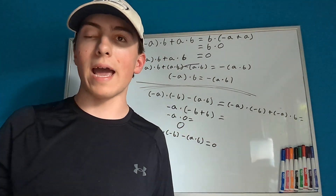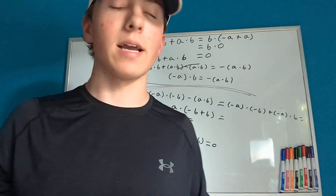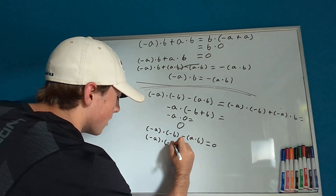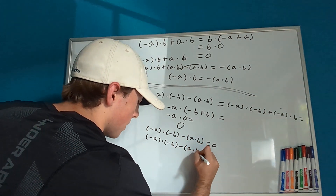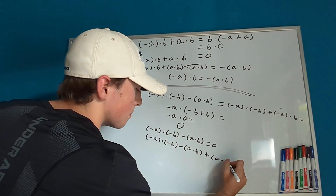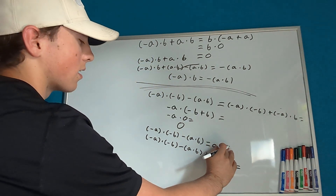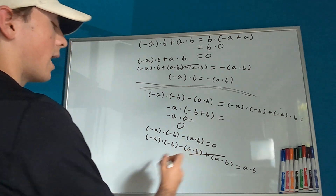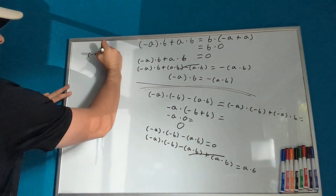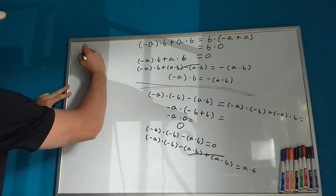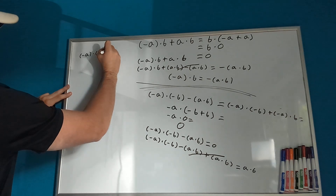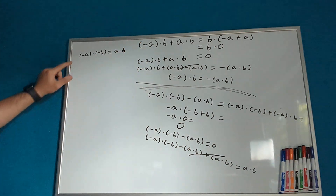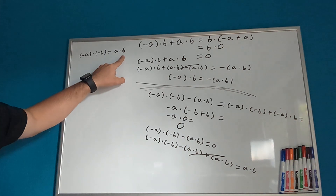What we want to do now is add a times b onto both sides. So this becomes negative a times negative b minus a times b plus a times b equals a times b. These cancel out and we are just left with negative a times negative b equals a times b. So I've just proven that a negative times a negative equals a positive.